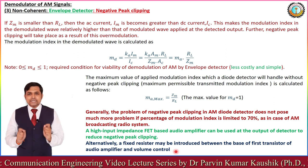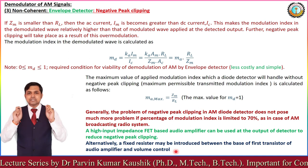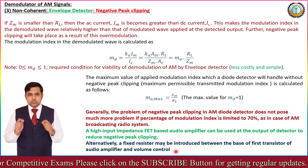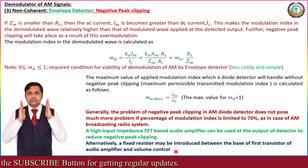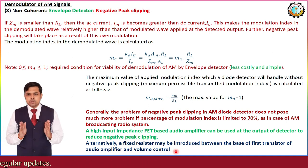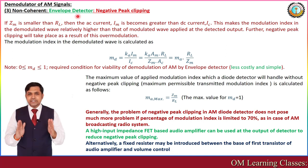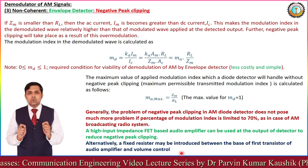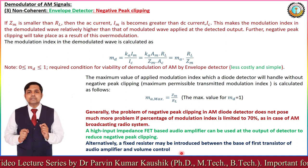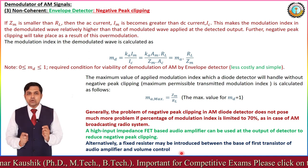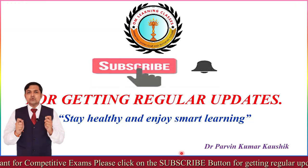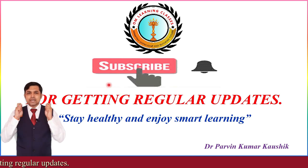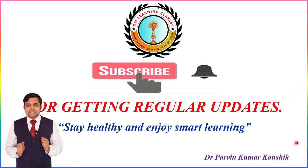With this, we have completed the envelope detector with its two distortion types: diagonal clipping and negative peak clipping. This topic is very important and most popular because the envelope detector has an advantage in AM broadcasting radio systems. In the next lecture, we have the fourth AM demodulator, that is the synchronous detector for demodulation of AM signals. Thank you very much for your precious time — stay healthy, enjoy smart learning, and please subscribe to this channel for regular updates.